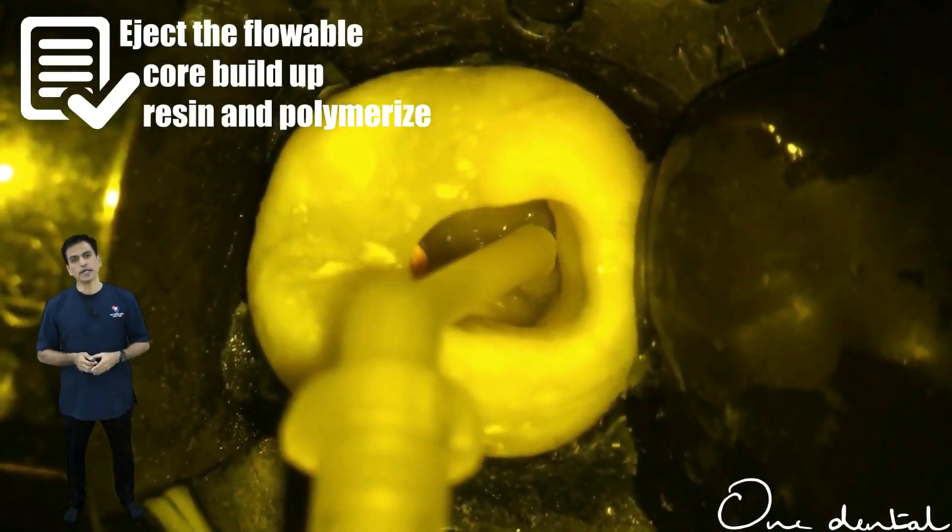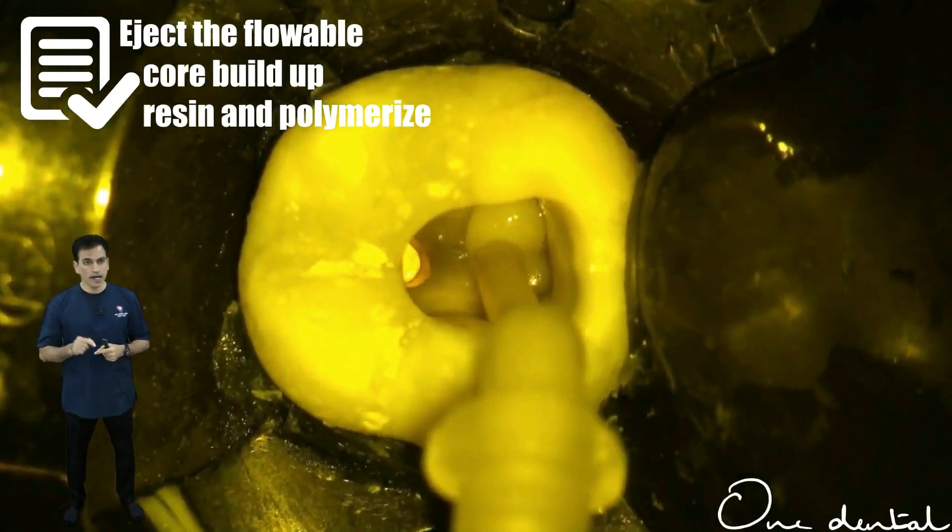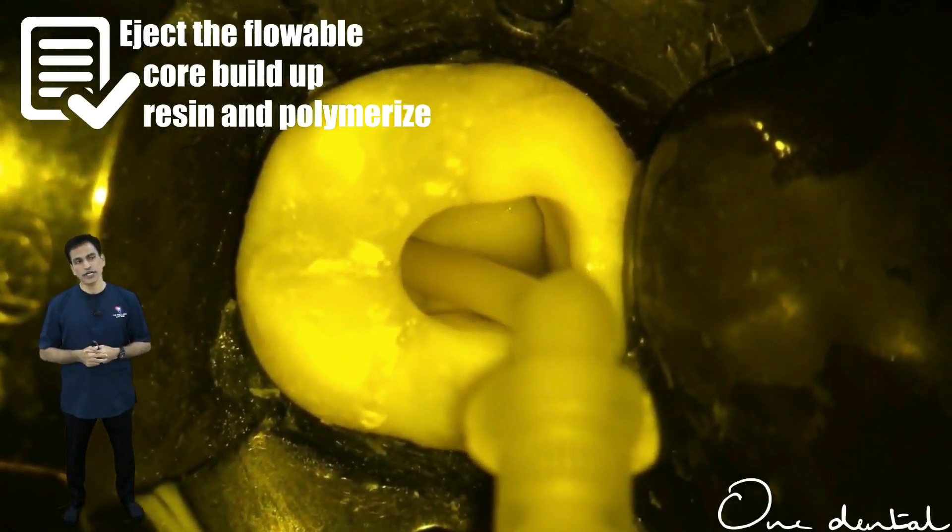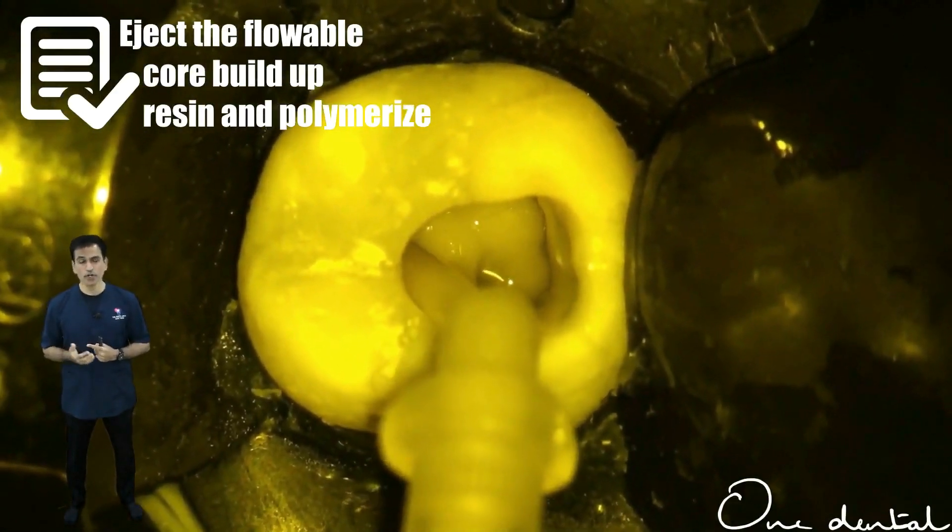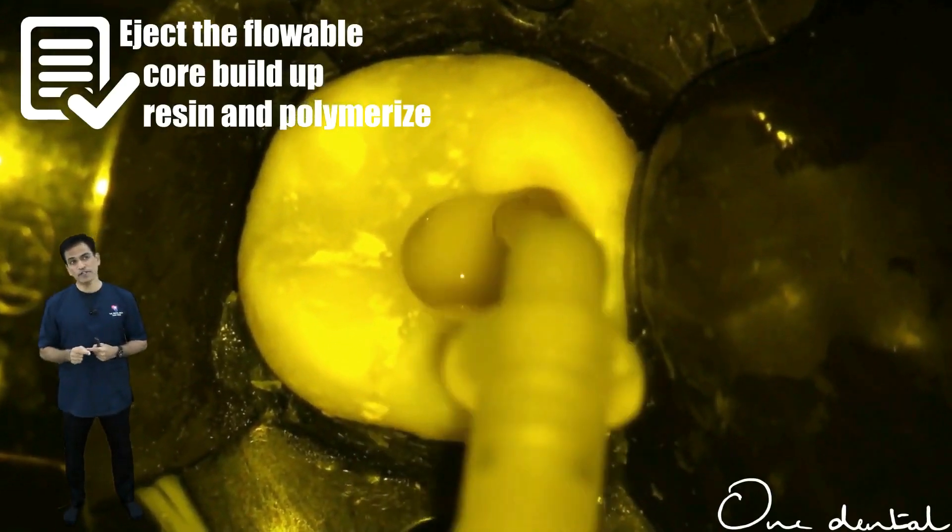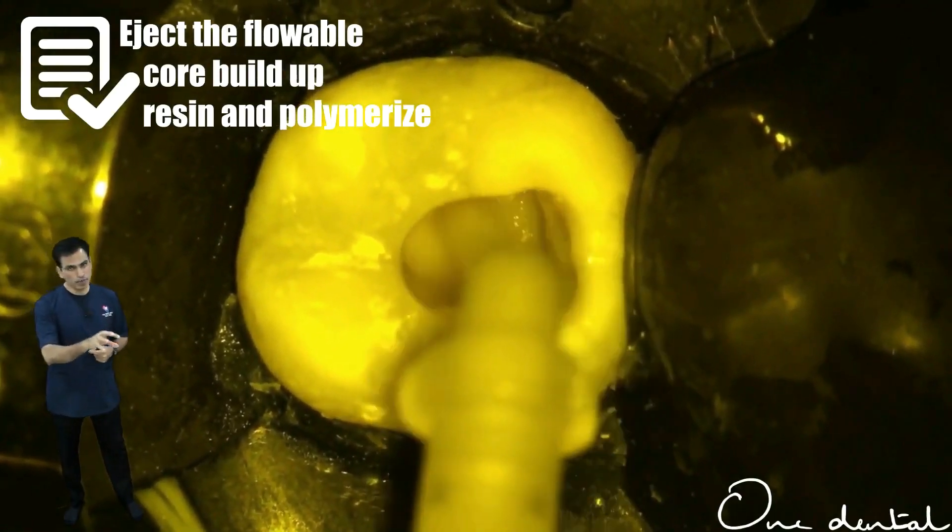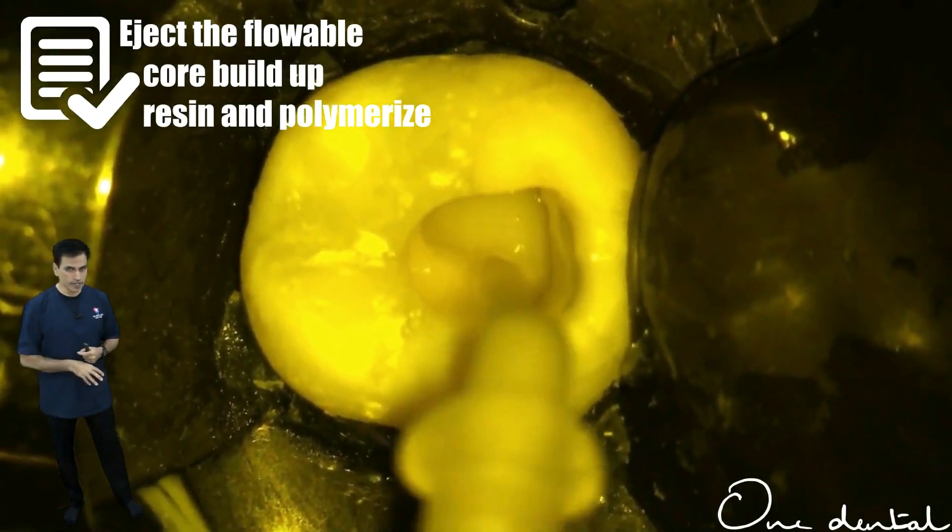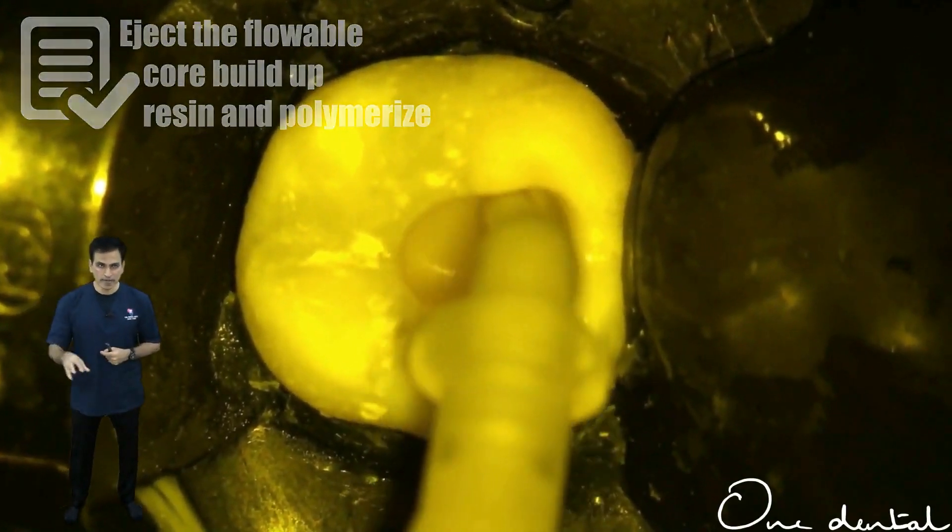We will keep the tip of the gun or the syringe in the deepest portion. Do not lift it out, you will get air bubbles otherwise. Even without lifting, start moving it from meso-buccal to mesolingual to distal. Thereby you evenly cover the deepest layer.